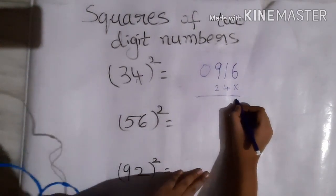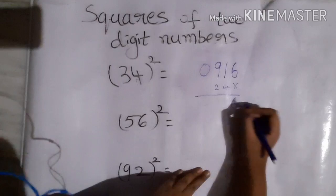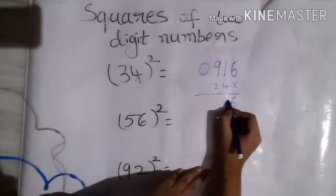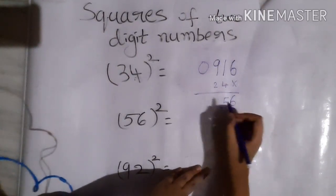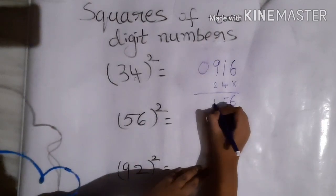6 plus 0 is 6, 1 plus 4 is 5, 9 plus 2 is 11.